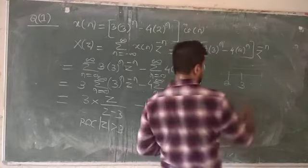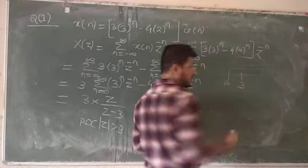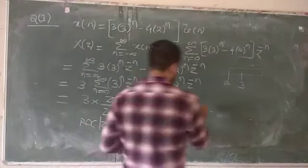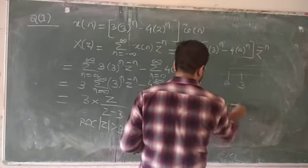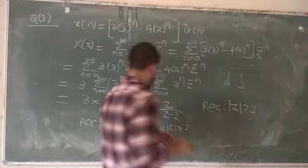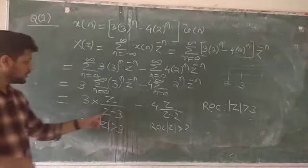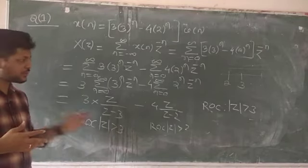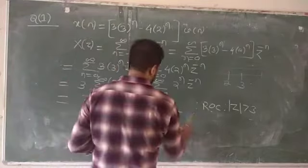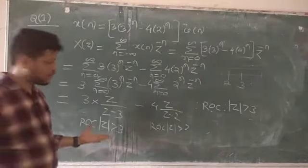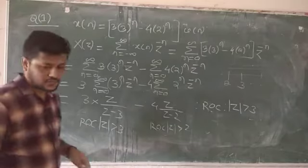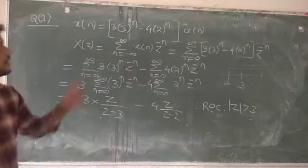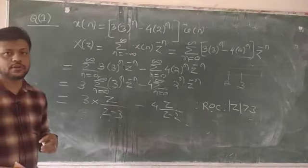The combined region of convergence is the intersection: one says |z| > 2 and another says |z| > 3, so the common region is |z| > 3. Therefore X(z) = 3z/(z−3) − 4z/(z−2), with ROC |z| > 3.